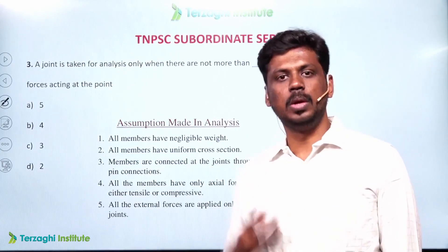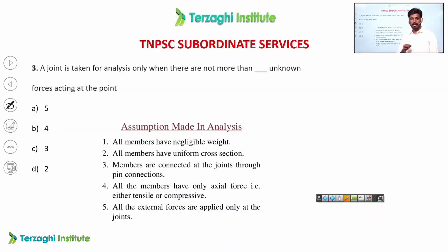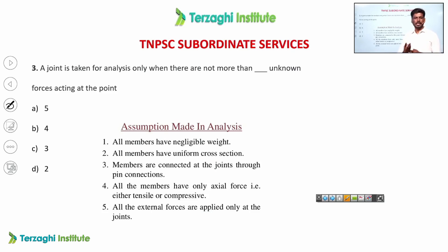We normally have three equilibrium equations: summation of H = 0, summation of V = 0, and summation of M = 0. However, since a truss is an axial member only, summation of M = 0 does not apply. So at each joint we apply summation of H = 0 and summation of V = 0 only.